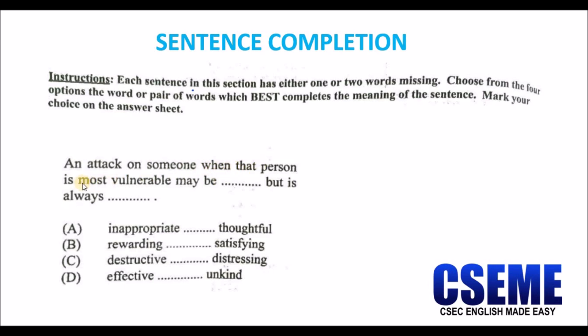Option C: 'may be destructive, but is always distressing.' For some people this option might work, but is it the best option based on what we're given? Option D: 'An attack on someone when that person is most vulnerable may be effective, but is always unkind.' Based on our options, the answer is D. If you chose D, you are correct.